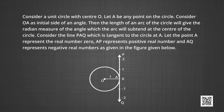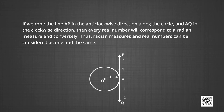Consider the line PAQ which is tangent to the circle at A. Let point A represent the real number 0. AP represents the positive real numbers and AQ represents the negative real numbers, as we can see in the figure. If we wrap the line AP in the anti-clockwise direction along the circle and AQ in the clockwise direction, then every real number will correspond to a radian measure and conversely. Thus, radian measures and real numbers can be considered as one and the same.